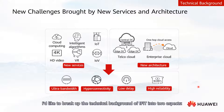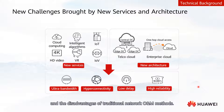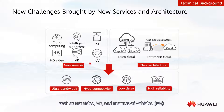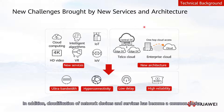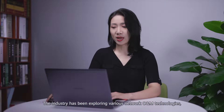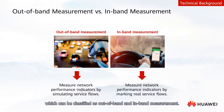The technical background of iFIT covers two aspects: the evolution of network services and network architecture, and the disadvantages of traditional network O&M methods. In the 5G and cloud era, the development of 5G has given rise to new services such as HD video, VR, and Internet of Vehicles. Cloudification of network devices and services has become a common choice for facilitating unified management and reducing O&M costs. These new services and architectures pose higher reliability requirements for transmission links. The industry has been exploring various network O&M technologies, which can be classified as out-of-band and in-band measurements.